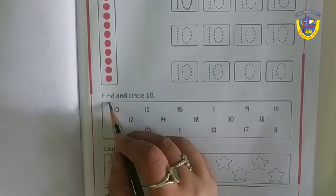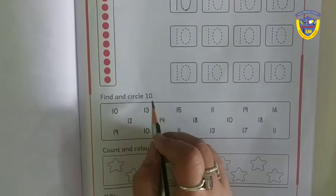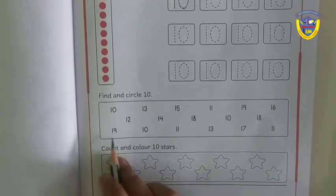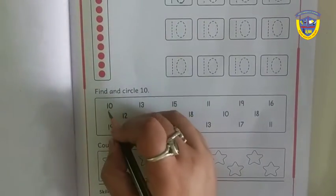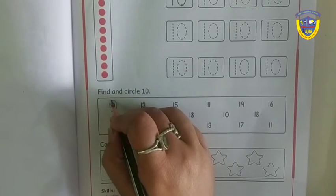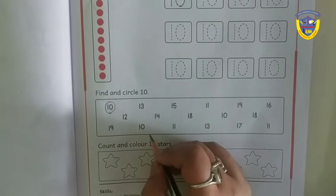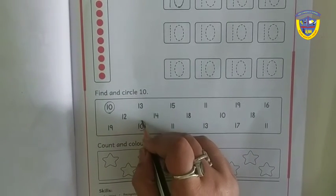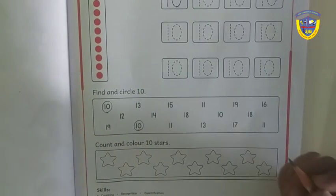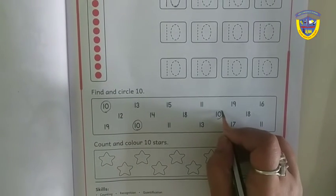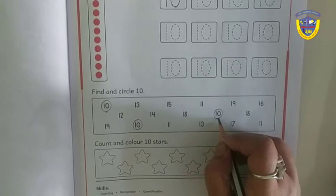Now we do find and circle 10. So let's find where is number 10. Yes, it is number 10. So we circle it. Once again we got number 10. One more we have. We have to circle it.